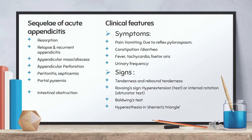Signs: Tenderness and rebound tenderness at McBurney's point are typical. Other signs include Rovsing's sign, psoas test, obturator test, and Baldwin's test, which are positive depending on the different positions of the appendix. PR examination shows tenderness on the right side of the abdomen. Hyperesthesia in Sherren's triangle, formed by the anterior superior iliac spine, umbilicus, and pubic symphysis, is also noted. Infection often gets localized by the omentum, dilated ileum, and parietal peritoneum, leading to an appendicular mass, or suppuration may occur in a localized area resulting in appendicular abscess.